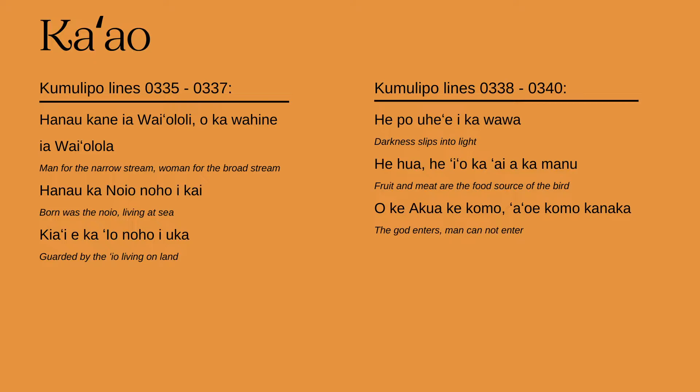Ka'ao is the Hawaiian word for stories shared over time within cultures that are a part of meaning-making. An essential story for native Hawaiians is the Kumulipo, the creation story. This story relates to EO natural history because it documents significant connections between native plants and animals, and provides a genealogy of Hawai'i's natural heritage. In this portion of the Kumulipo, the EO has a role to play in the creation of the world.